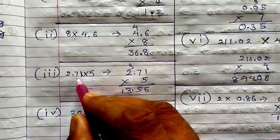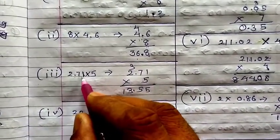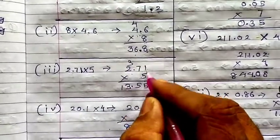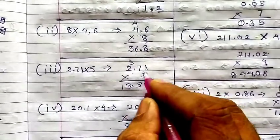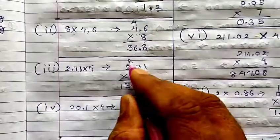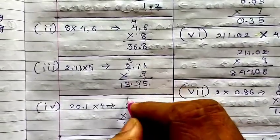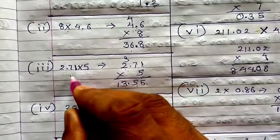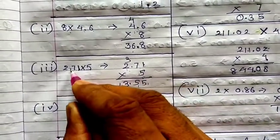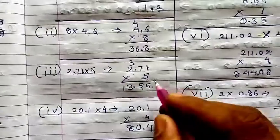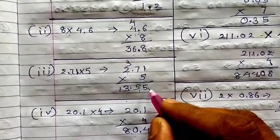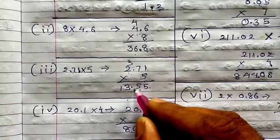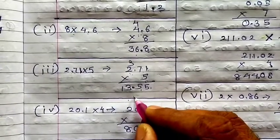Then 2.71 into 5. 5 ones are 5. 5 sevens are 35, carry 3. 5 twos are 10, plus 3 is 13. Where to put the decimal? In the question, after the decimal there are 2 digits, so in your answer leave 2 digits from the last and place your decimal there.